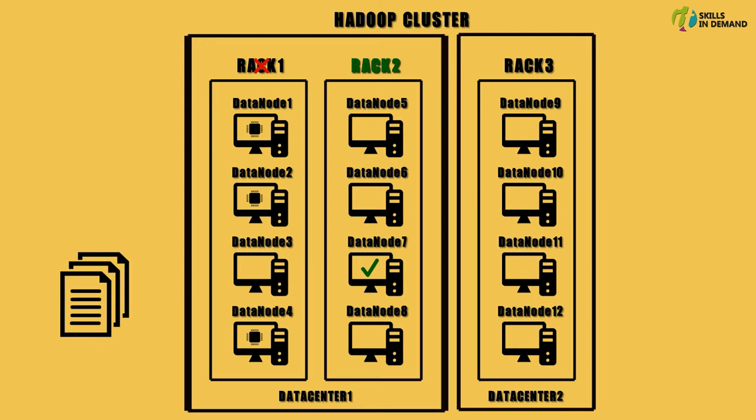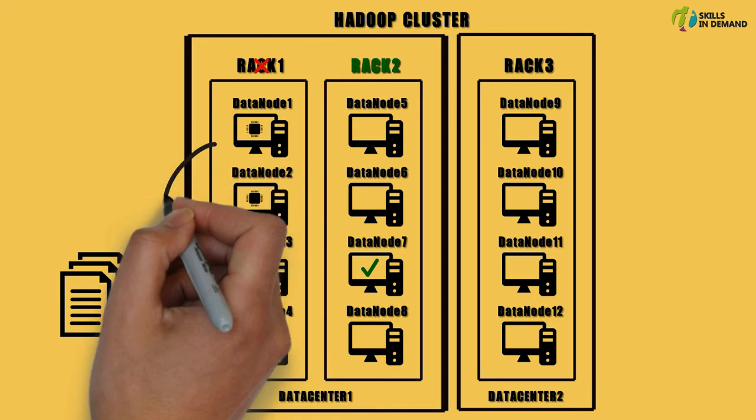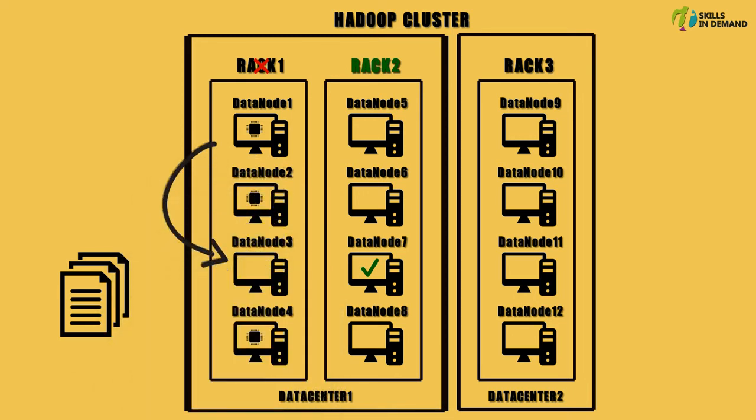In order to do so, it needs to stream the data to this machine. Since this data needs to be streamed within the same rack, the bandwidth consumption would be less. This process is commonly referred to as rack local task.